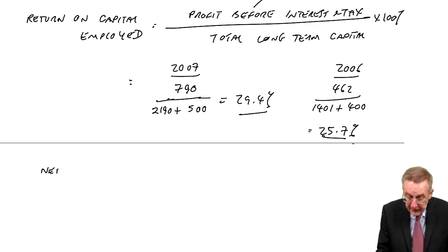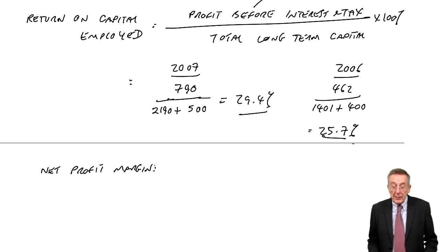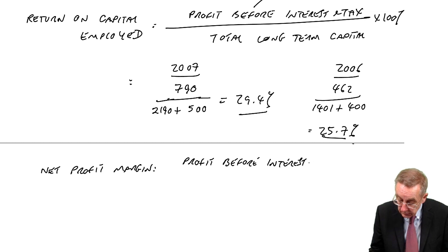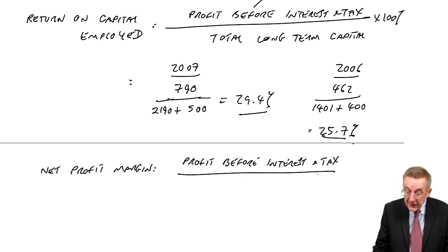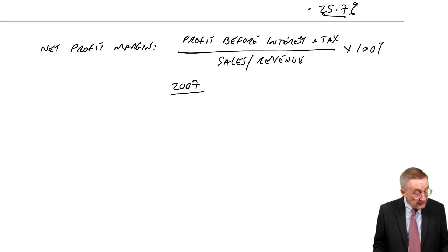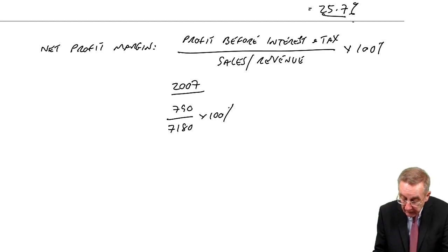First of all, the net profit margin. And although in financial accounts, net profit means the very final profit, here, for the same reasons as return on capital employed, it means the operating profit, the profit before interest and tax, as a percent of the sales or the revenue. Same thing. So let's look at it in both years. In 2007, the operating profit, the profit before interest and tax was 790. The total revenue, the total sales was 7180. So in percentage terms, 11%.